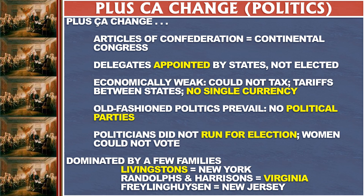Delegates were not elected — they were appointed by the states, usually by the governor and the legislature. So the people serving in the national government didn't have a grounding in individual voters, but in the power centers of each state, which might be in the hands of the dominant families or wealthiest individuals in those states.